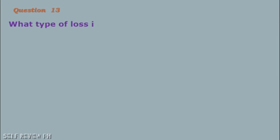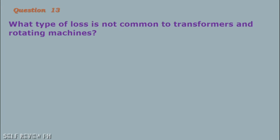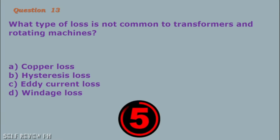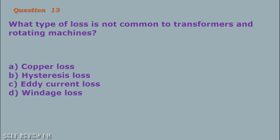Question number 13: What type of loss is not common to transformers and rotating machines? A. Copper loss B. Hysteresis loss C. Eddy current loss D. Windage loss. The correct answer is letter D, windage loss.